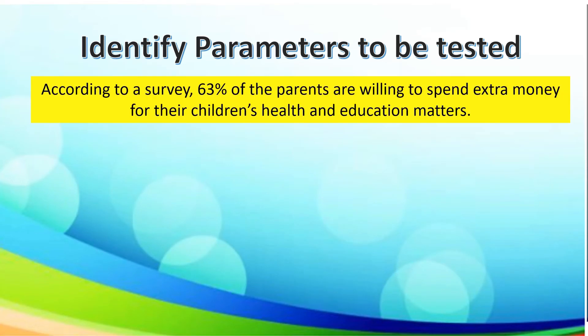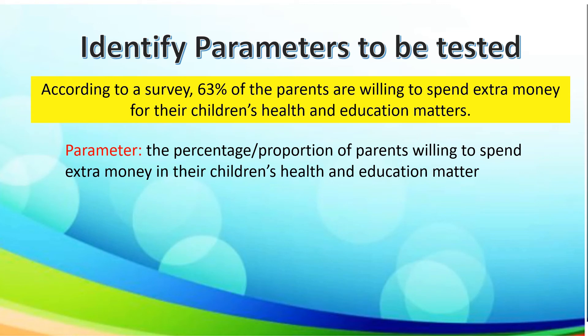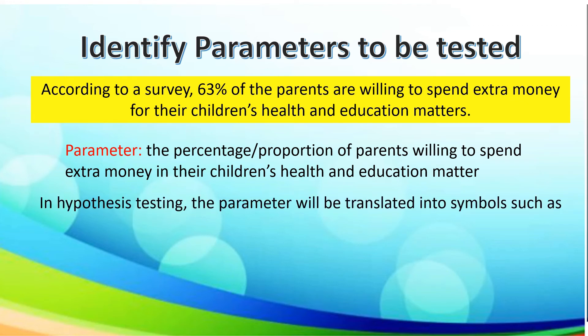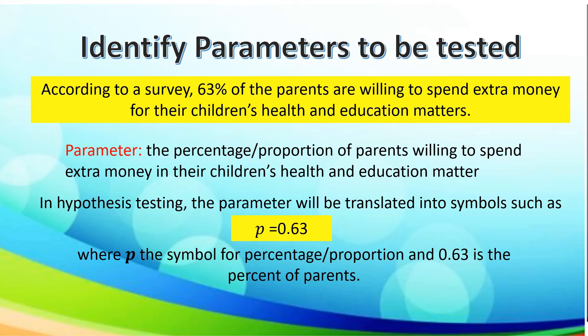Let's take another one. According to a survey, 63% of the parents are willing to spend extra money for their children's health and education matters. The parameter states the percentage or proportion of parents willing to spend extra money in their children's health and education matters. In hypothesis testing, we translate the given parameter into symbols such as p is equal to 0.63, where p is the symbol for percentage or proportion and 0.63 is the percent of parents.